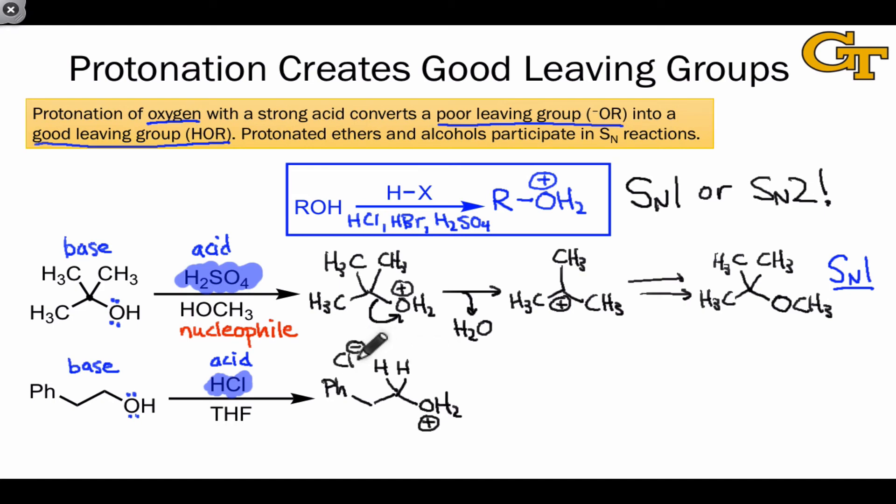At this point, that conjugate base, especially one that's a decent nucleophile like chloride, can engage in an SN2 process that results in substitution of water for the conjugate base of the strong acid used, in this case chloride. Once again, water is a byproduct, and the mechanism here hinges on an SN2 step rather than an SN1 process because of the primary nature of the electrophile.